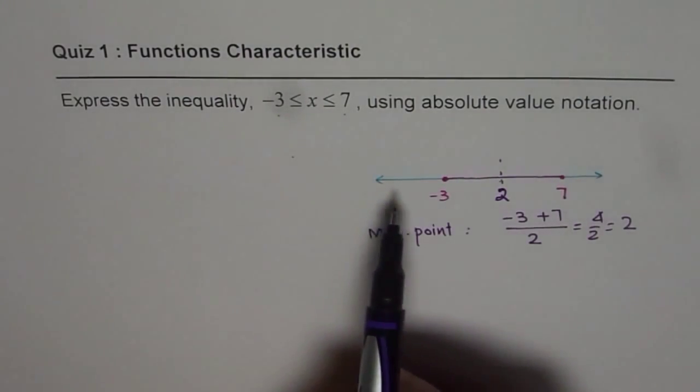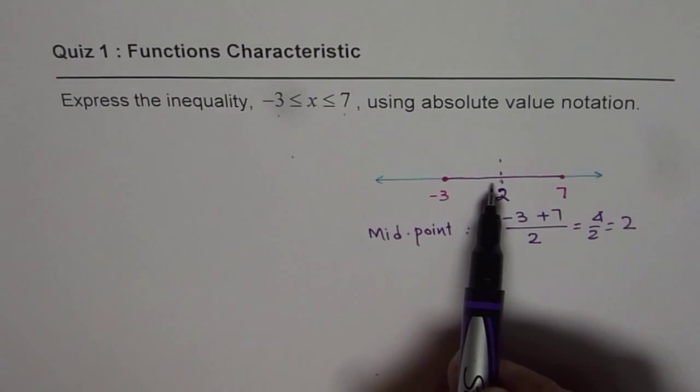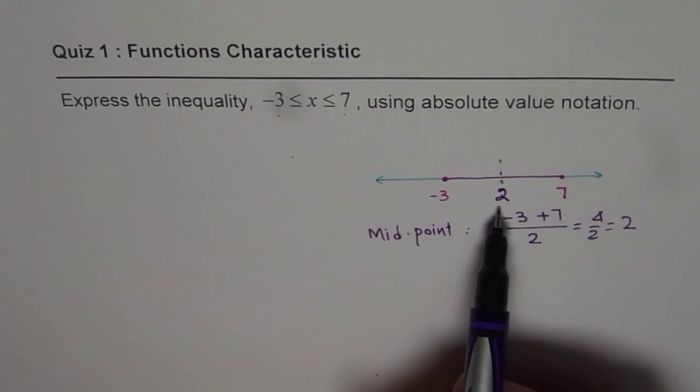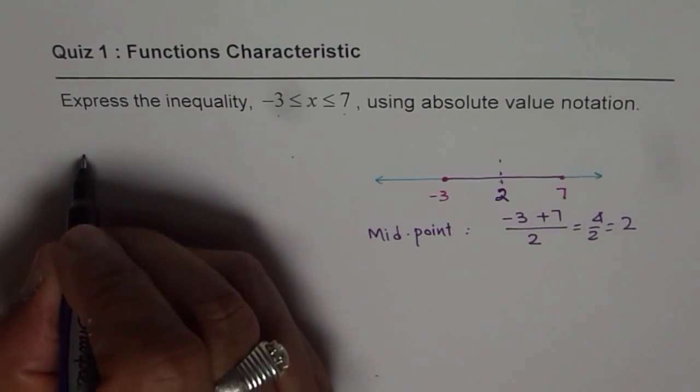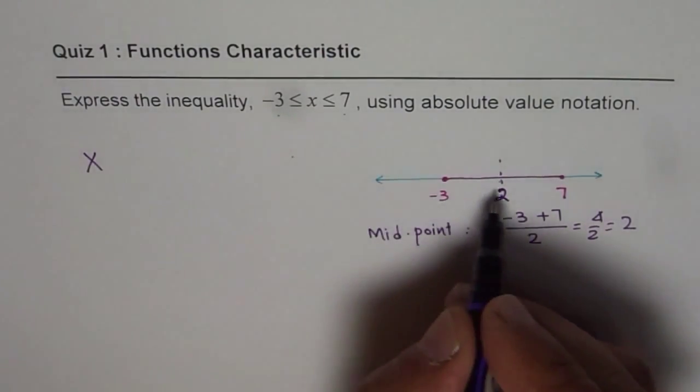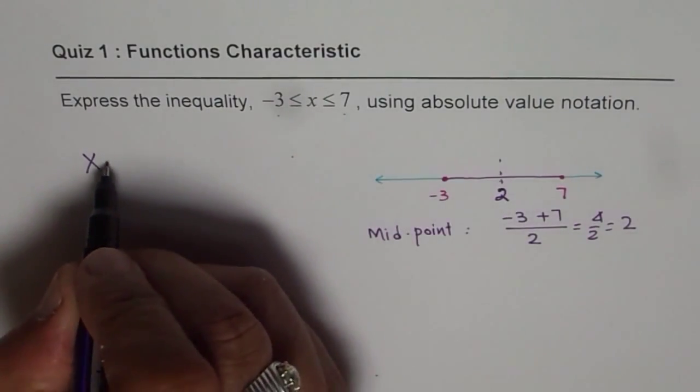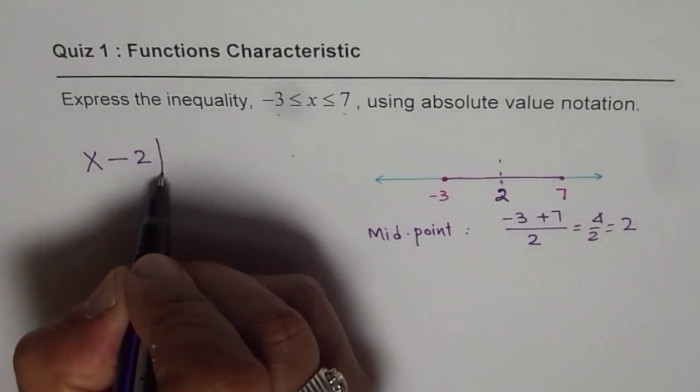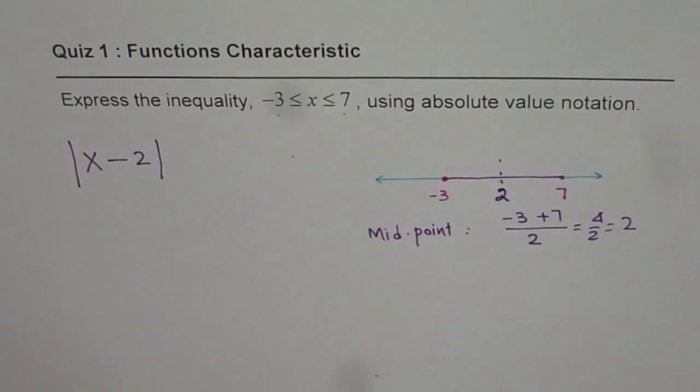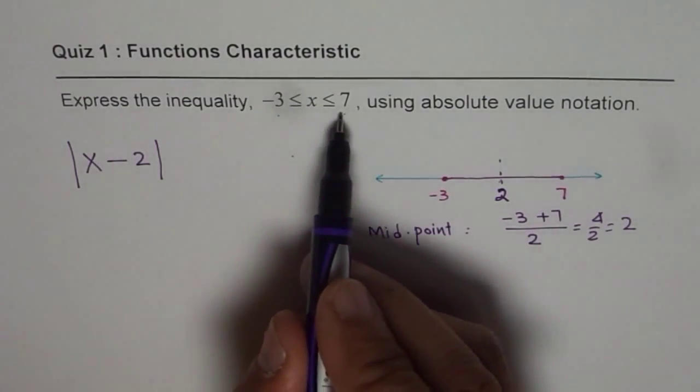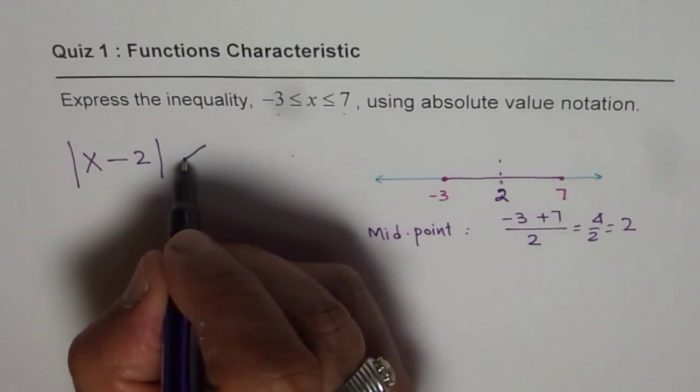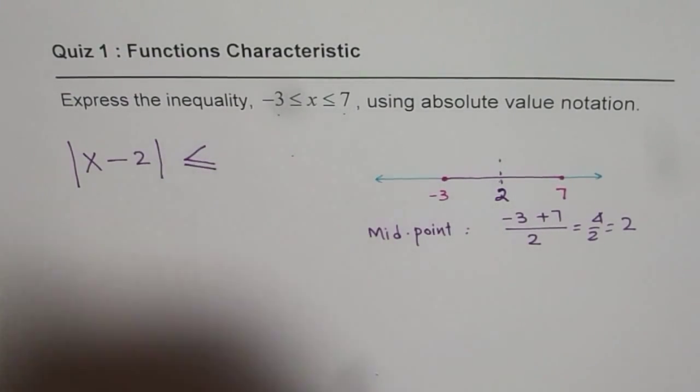The absolute function should be translated horizontally 2 units to the right. Translated 2 units to the right means x - 2, so that becomes my absolute function. Now since it is in between and these two points are included, we'll write the inequality as less than or equal to.